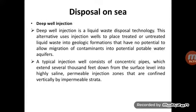This method ensures that untreated sewage effluent does not contaminate nearby potable water bodies. A typical injection well consists of concentric pipes extended several thousand feet below the surface level into high-saline water, in a permeable injection zone that is confined vertically by impermeable strata.